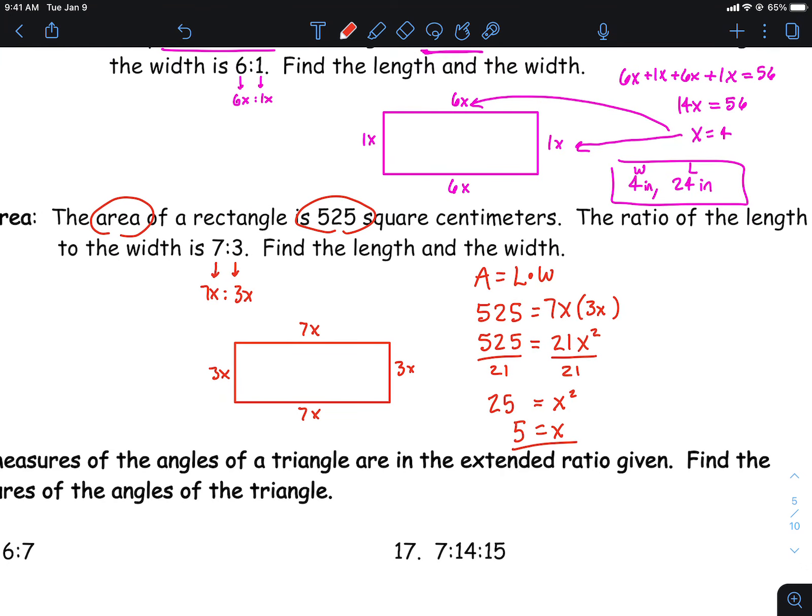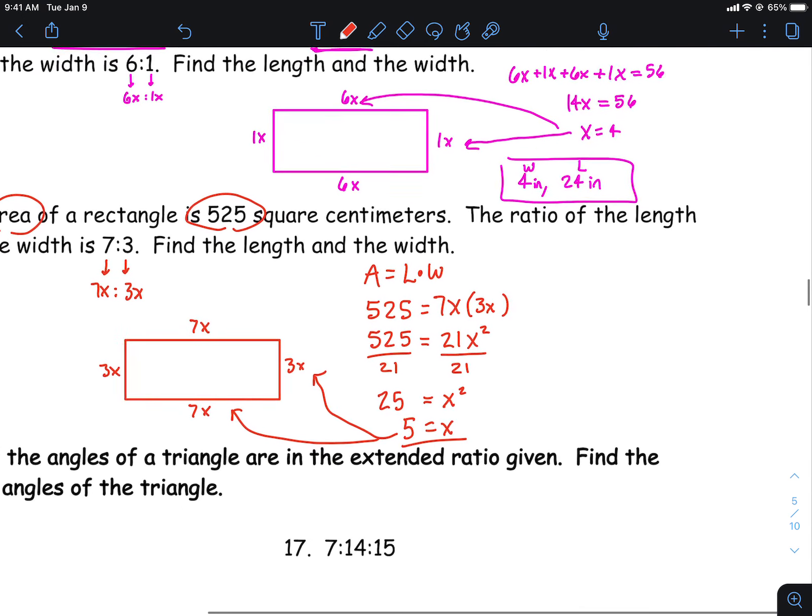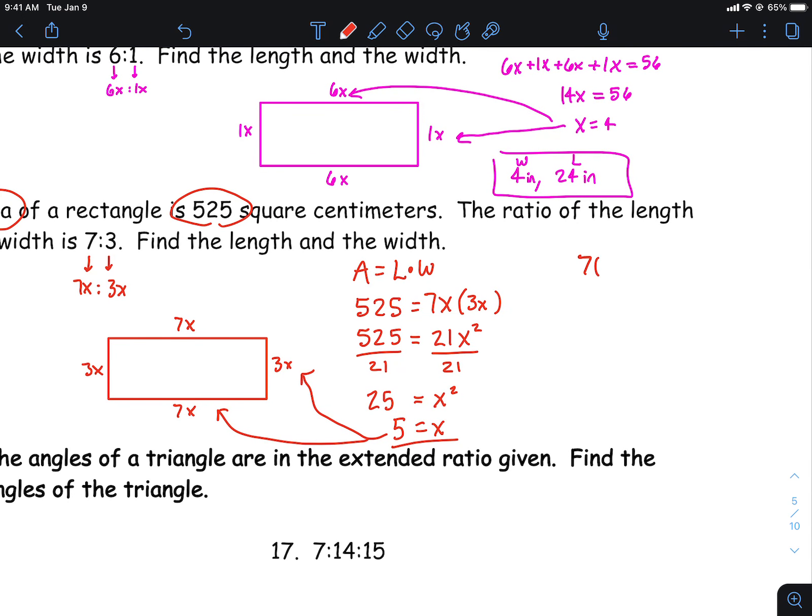And then you can square root both sides and you can get that x is 5. And just like the last one, x equals 5, that's actually not the answer. You've got to go plug right back in. Okay, so the length and the width, the length is 7 times the 5, which will be 35.